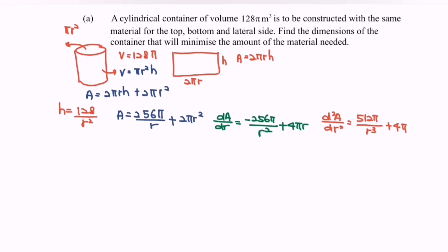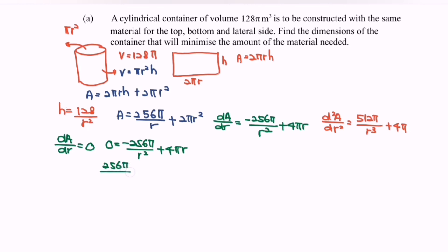To find the critical value, set dA/dr = 0. Substituting gives 0 = −256π/r² + 4πr. Rearranging, r³ = 256π / 4π, which simplifies to r³ = 64, so r = 4.